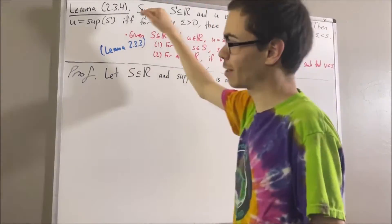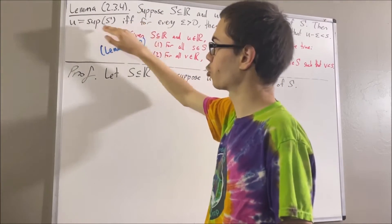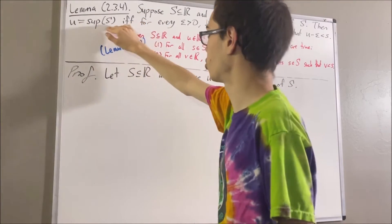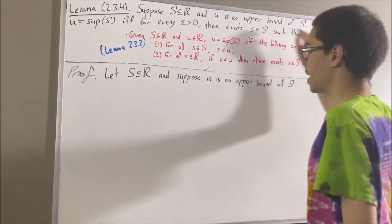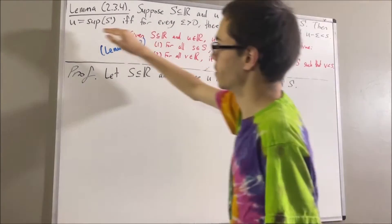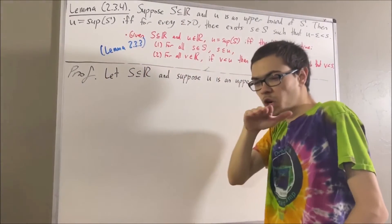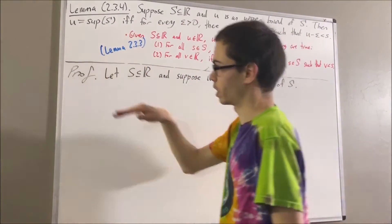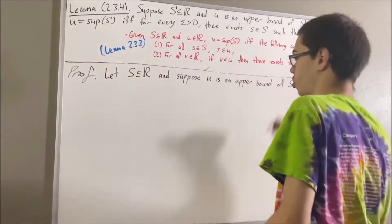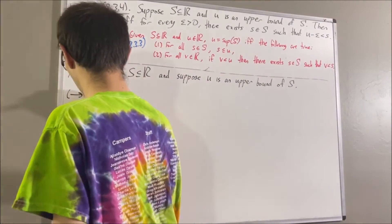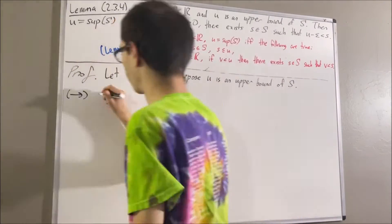We're trying to prove a statement containing if and only if. So what we're going to do is prove the forward direction — if u is the supremum then the epsilon condition holds — and then prove the converse. Let's start by proving the forward direction. Suppose u is the supremum of S.